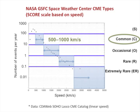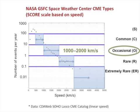The second type of CMEs are those with a speed between 300 and 600 miles per second, which we call C-type for common. Next are the CMEs moving at 600 to 1200 miles per second. We call these O-type for occasional, since CMEs with speeds in this range happen a few times per year.